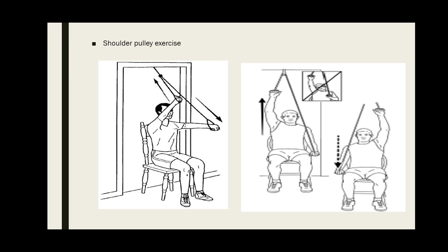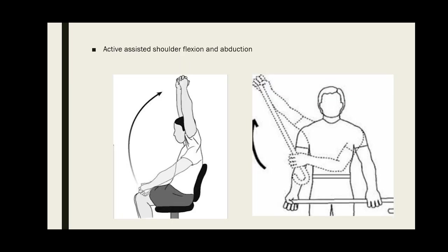Active assisted shoulder flexion and abduction: clasp hands together and try to raise your arms together towards the ceiling. Hold at end range, then slowly move your hands down. This is active assisted shoulder flexion. Now active assisted shoulder abduction: hold a stick with both hands, put the affected arm up to the side of your body by the help of your unaffected arm.